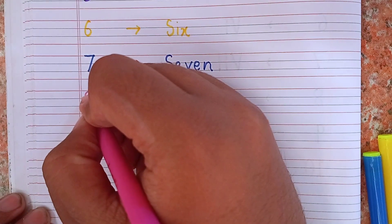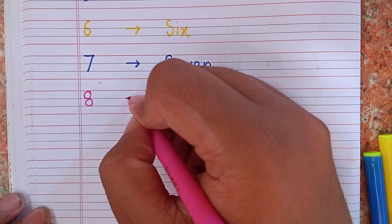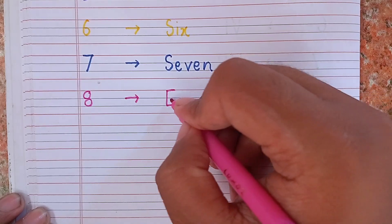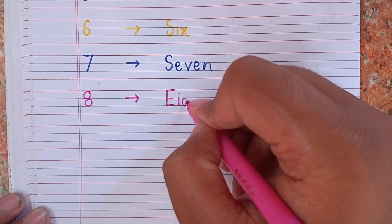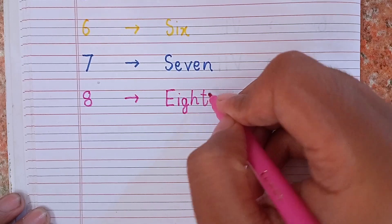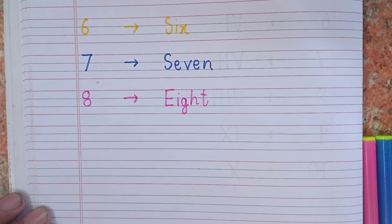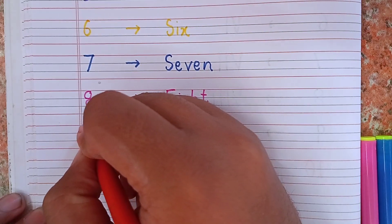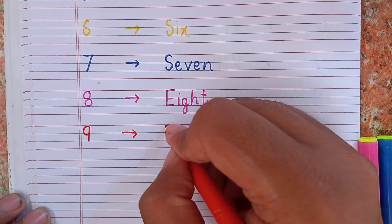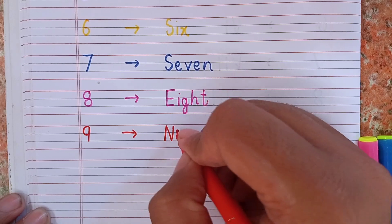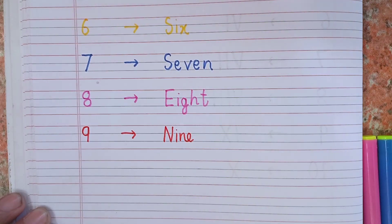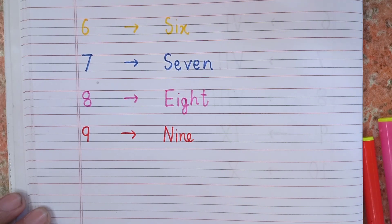Now I am writing 8. This is 8: E I G H T. After 8, I have 6, 7, 8. Now I will write the spelling of 9: N I N E. Remember the spelling of 9, N I N E.